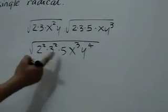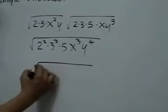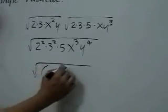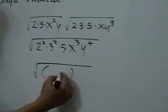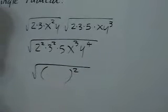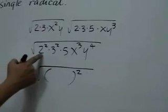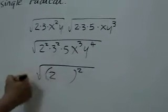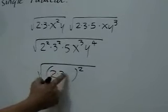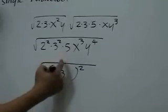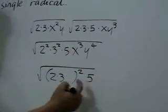Next, we will write this radical as the product of two factors with one of the factors being a perfect square. So we have 2 squared here times 3 squared, 5 will be written here in the other factor.